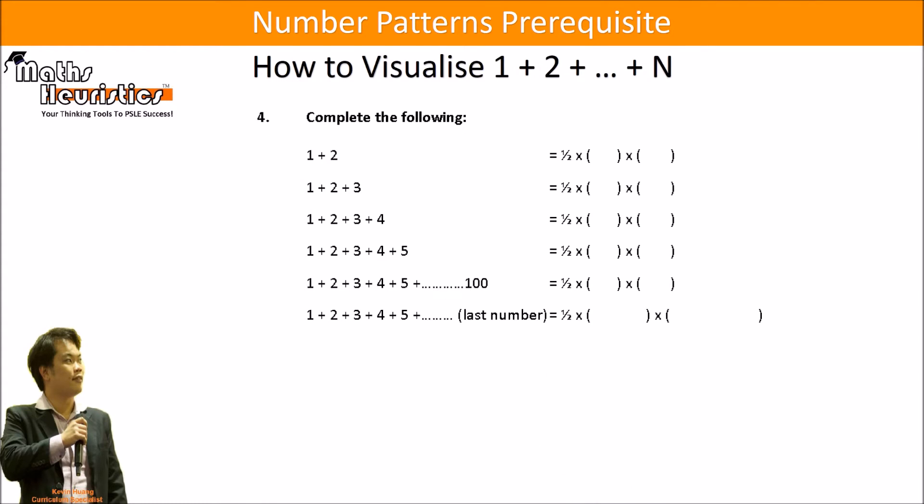So if we are to complete this table: 1 plus 2 will be equal to half times 2 times 3, 1 plus 2 plus 3 as we found out earlier is half times 3 times 4, 1 plus 2 plus 3 plus 4 will be equal to half times 4 times 5. So what about if I change this last number to 5? It's still going to be half times 5 times 6.